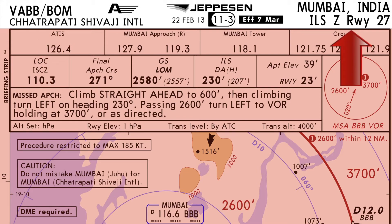In the top right corner, the name of the city and the country where the airport is located are printed — Mumbai, India — followed by the type of approach, which is ILS Zulu Approach for Runway 27. Some airports have multiple approaches for a single runway. They can be classified as X-Ray, Yankee, or Zulu.